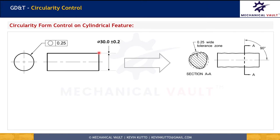The circularity tolerance zone shall always be lesser than the associated size tolerance or any other geometric tolerance which indirectly controls the circularity. For example, if the diameter of the cylindrical feature of size is 30 ±0.2, the total tolerance on that diameter is 0.4. So this circularity tolerance zone should always be lesser than 0.4 — in this case it is 0.25. Rule 1 of GD&T tells us that if no form control is given on the drawing, the size tolerance controls the form. Circularity must be applied only when we want circular element control tighter than the size tolerance.